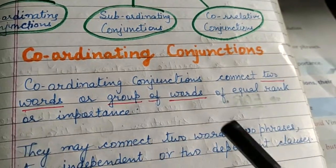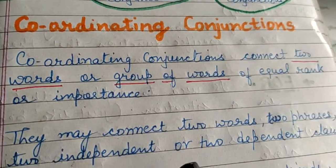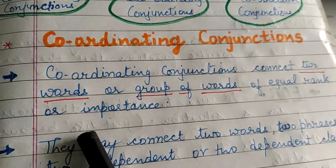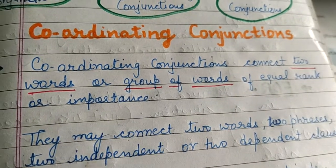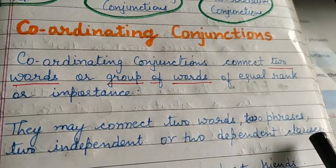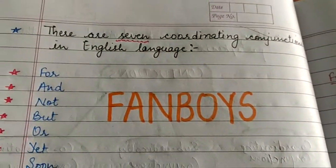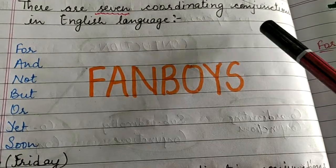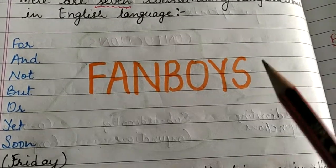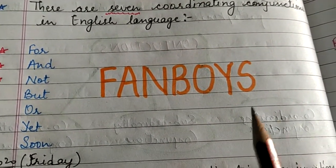So what are coordinating conjunctions? Conjunctions that join two words, group of words or phrases, or clauses that are of equal importance. It may join two phrases, two independent or two dependent clauses. There are seven coordinating conjunctions that you can all remember by using the acronym FANBOYS.